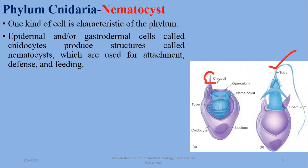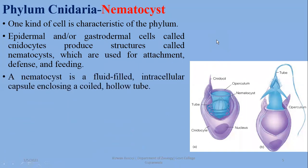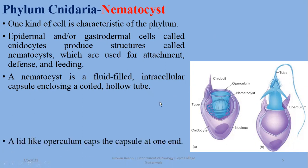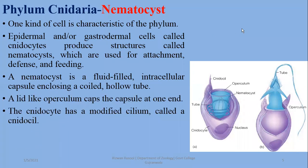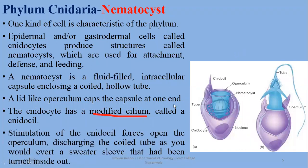There is a modified cilium-like structure called the cnidocil on the cnidocyte, which acts as a triggering structure. When the cnidocil is pressed or dislodged, it projects out the nematocyst's hollow thread. There is a lid-like covering over the cnidocyte. The cnidocil is a modified cilium that acts as the triggering mechanism. Once the structure is dislodged and projects out, it cannot retract back inward. New nematocysts are produced by the cnidocyte.